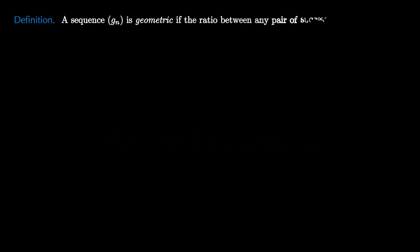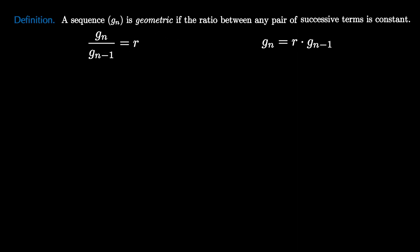To answer this type of question, we first need to investigate our second family of elementary sequences, those with a common ratio. We call a sequence geometric if the ratio between any pair of successive terms is constant, so that g_n divided by g_{n-1} is always a constant value which we'll call r. We can use this formula to rewrite as g_n equals r times g_{n-1}, and see that this is a recursive formula.